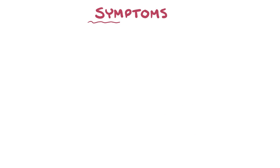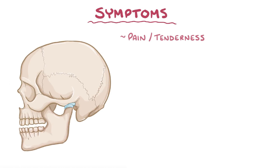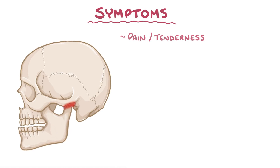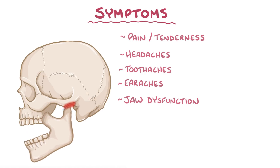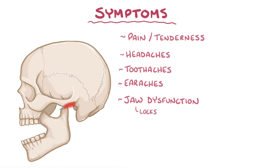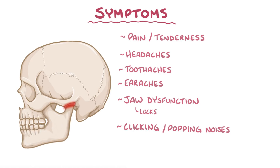The main symptom of temporomandibular joint disorder is pain or tenderness, especially with movement of the jaw, like when chewing. The pain can also radiate, causing headaches, toothaches, and earaches. It can also cause jaw dysfunction and limited range of jaw motion, where the jaw catches or locks in a certain position. There can also be clicking or popping noises when moving the jaw, as well as jaw deviations.